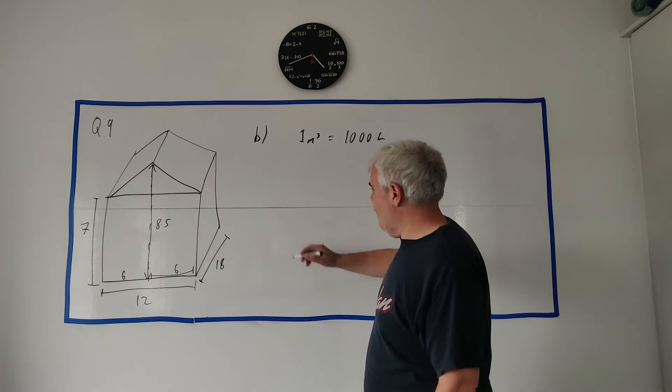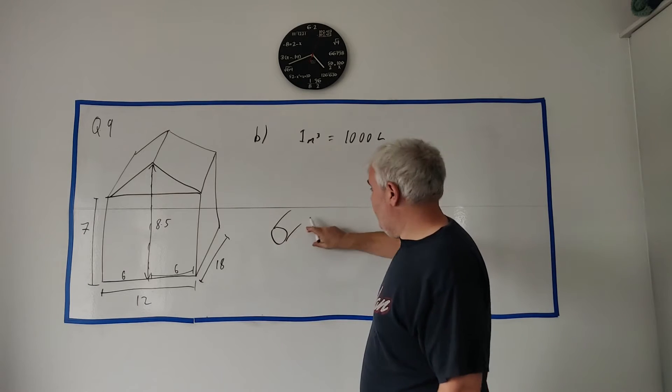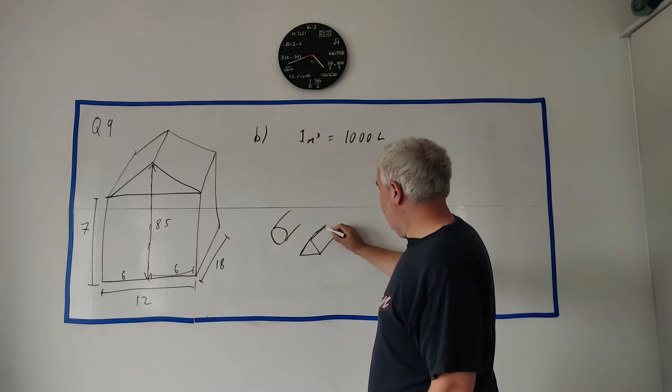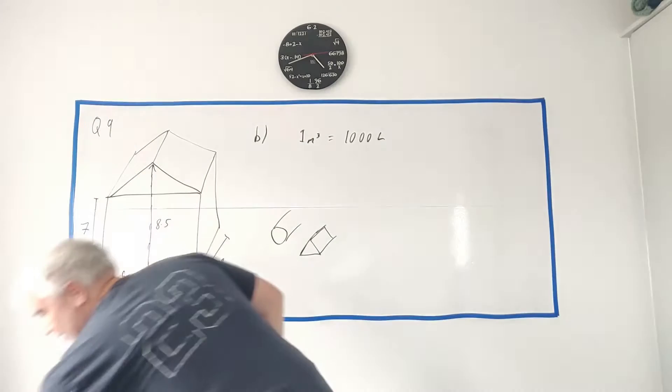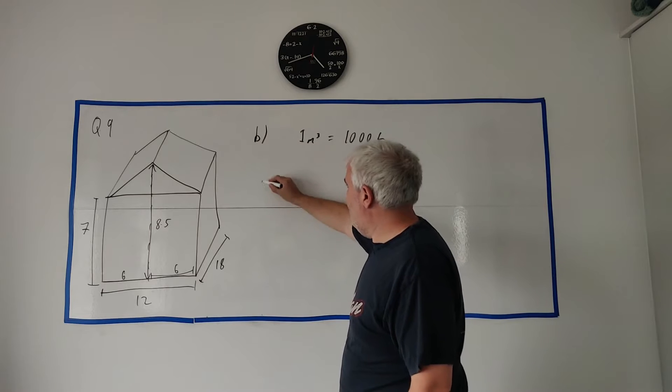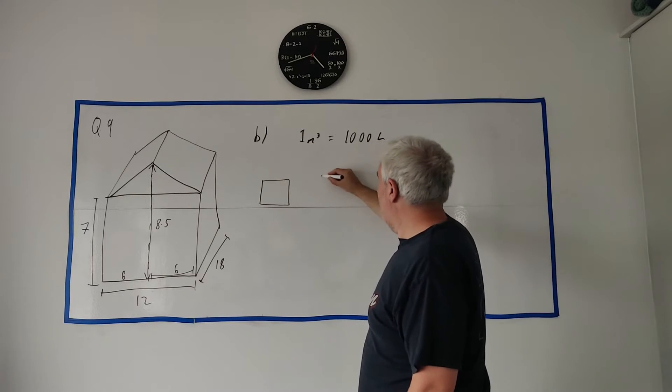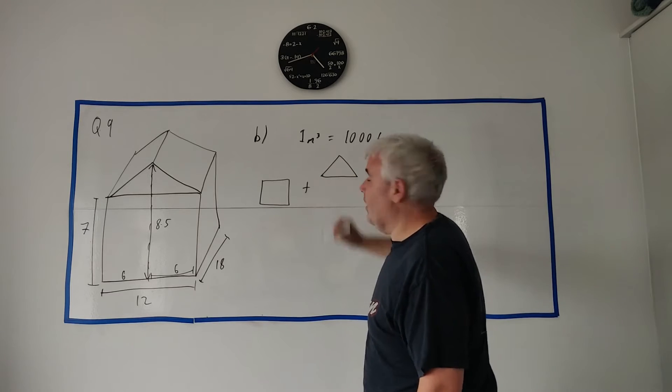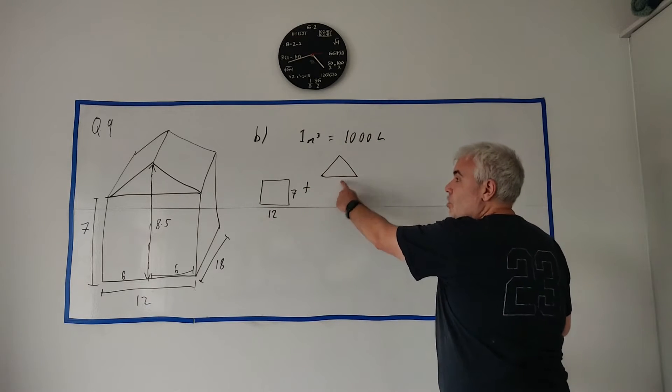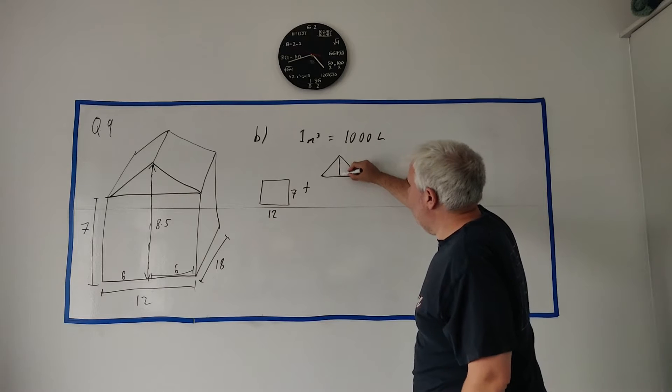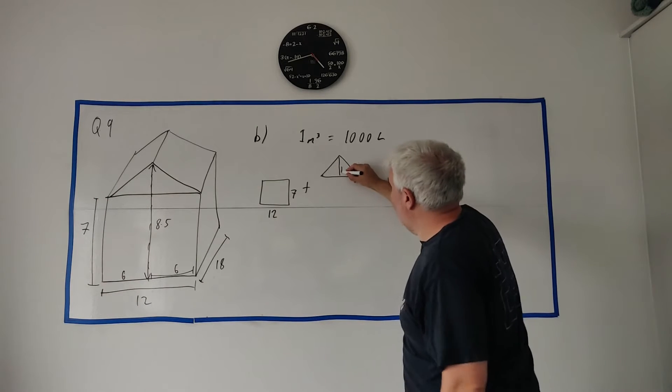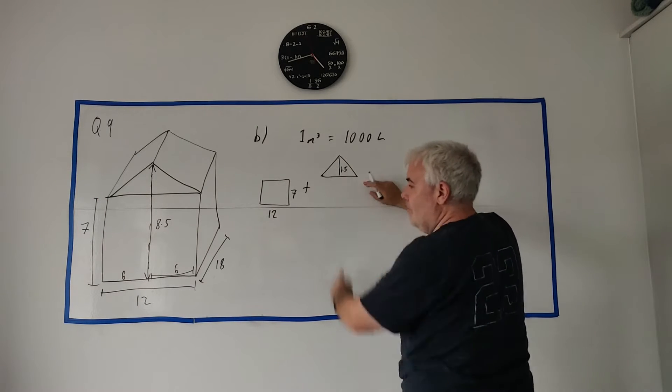So, let's find the area of the front first, and then just multiply that by 18, and we should get the volume. For example, if you were trying to find the cylinder, get the area, multiply it by the depth. A triangular prism, the area, multiply it by the depth. The formulas are all the same for them. So, in this case, to get the area of the front, it's a shape made up of a rectangle and a triangle. So, we just add these two together. Let's get the area of the rectangle, that's 12 times 7, and let's get the area of the triangle. What's the height of the triangle? 8.5 minus 7, so that's 1.5, and the width, the base of it is 12.